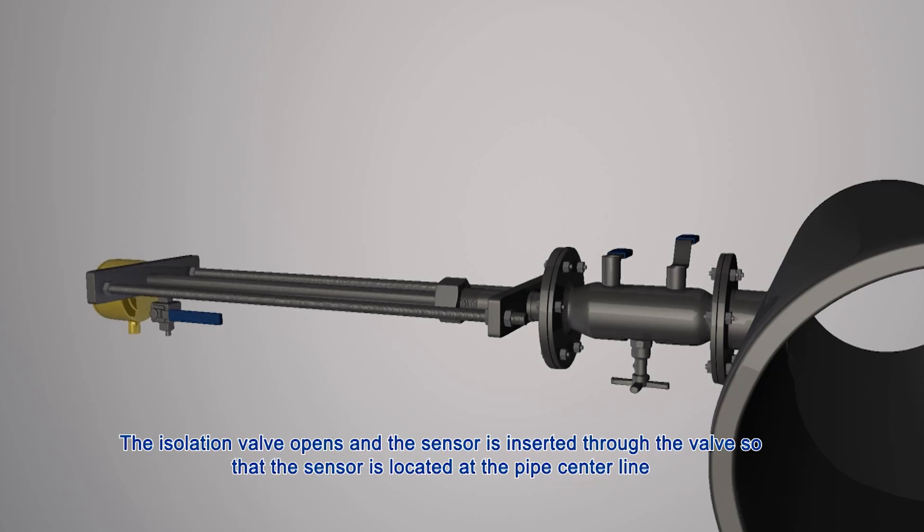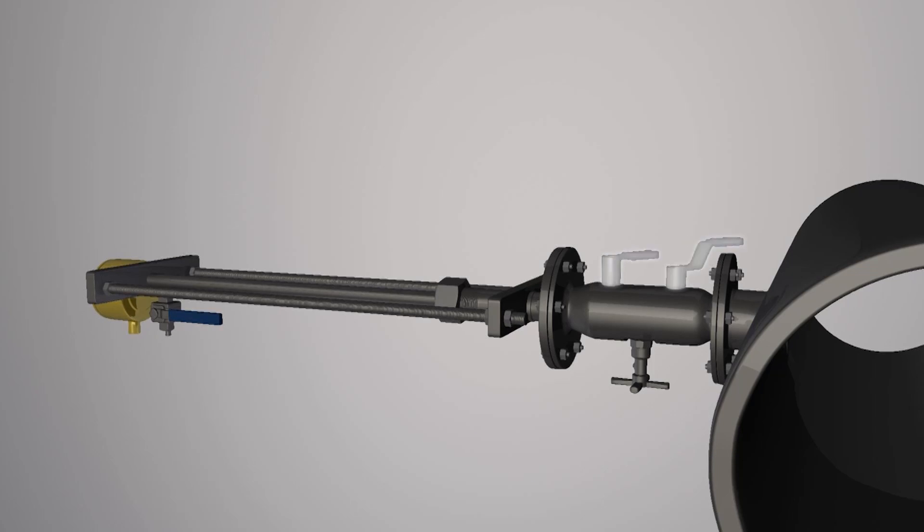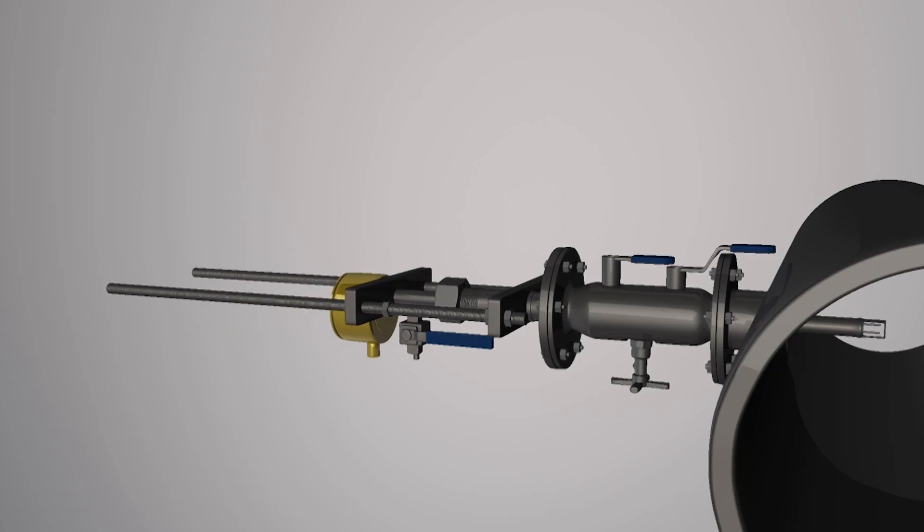This illustration shows how dual insertion rods provided on meters with greater than 50 PSIG pressure control insertion and retraction of the probe while the process line remains under pressure. The packing gland is tightened.